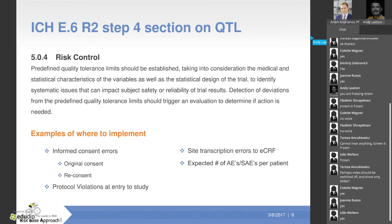This is the section that will change the way we handle quality. Pre-defined quality tolerance limits should be established taking into consideration the medical and statistical characteristics of the variables, as well as the design. Deming would call this profound knowledge. The purpose of these quality tolerance limits is to identify systematic issues that impact safety or reliability of trial results — focusing on safety and data integrity.